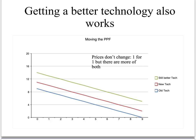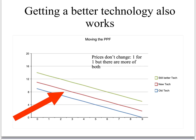Better technology works the same way. Here's your old technology, where you do everything by hand. Here's a better technology, where you have some tools and you're a little more clever. Here's an even better technology, where you've got a really smart way to grow these things. The technical changes I've drawn here are the same for both, so there's no change in relative prices. It doesn't have to be that way — it just happens that that's how I drew it.